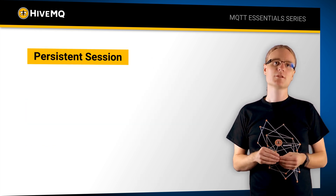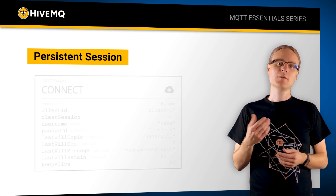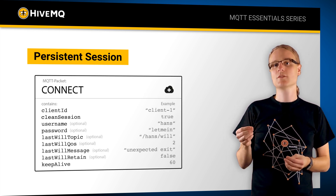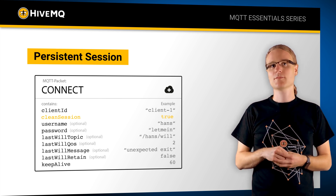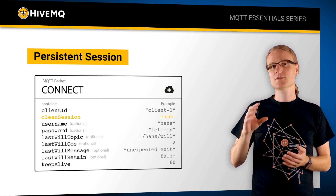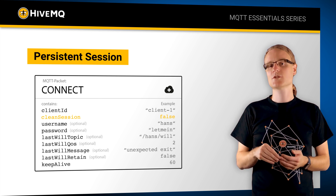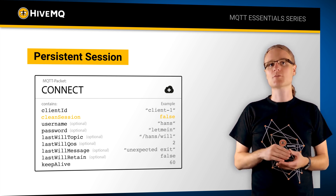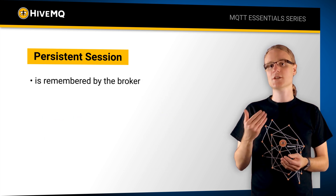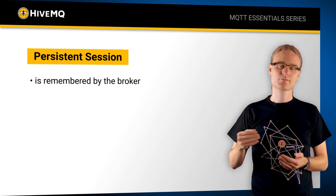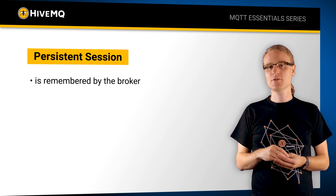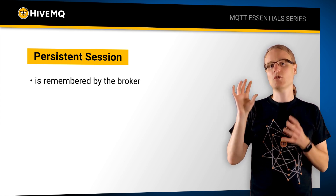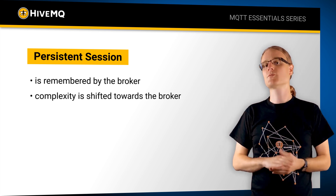We have seen in the previous videos that MQTT connect packets can carry a so-called clean session flag. And if you set this to false, which means you have a persistent session, you're basically telling the broker that you want to have a session which the broker remembers. One of the key design principles of MQTT is that it's easy to implement on the client side, and so all the complexity is pushed to the broker.